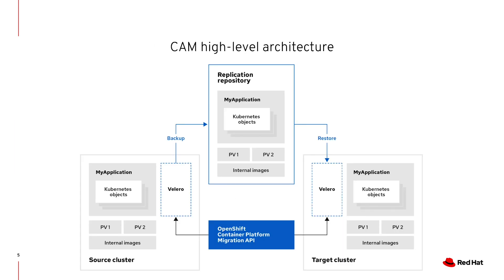Here's what the CAM high-level architecture looks like. On the left side I have my source cluster, which would typically be an OpenShift 3 cluster, on which I would install Velero. On the right side, on my target cluster, I would use an operator to install Velero as well as the OpenShift Container Platform migration API, which comes with a UI. You can either directly use the API or the UI during the migration process. The object storage at the top is used to back up the data before it gets restored on your target cluster.